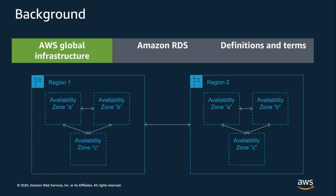I like to think of a region as a geographic location where you can build highly available applications. To achieve this, each region is built from a cluster of data centers organized into availability zones, or AZs. Availability zones in a region are physically separated from each other by a meaningful distance and connected by high bandwidth, low latency fiber. This means AZs are close enough to synchronously replicate between them, but far enough that failures affecting one are not likely to affect another.